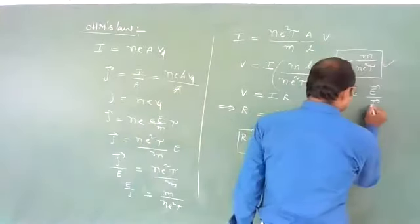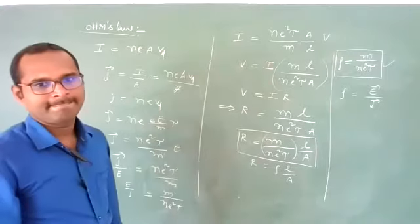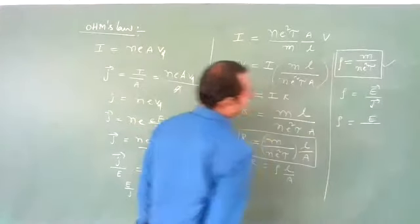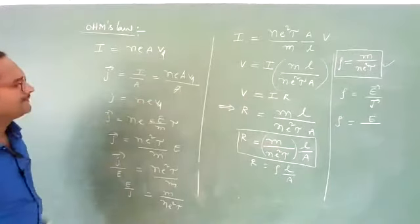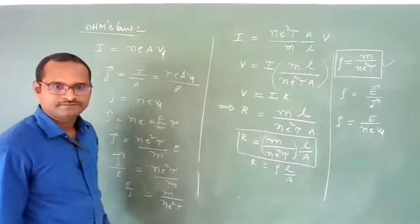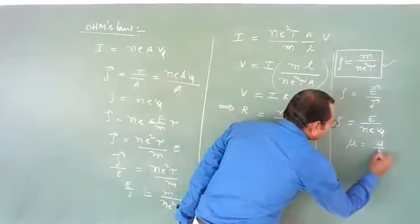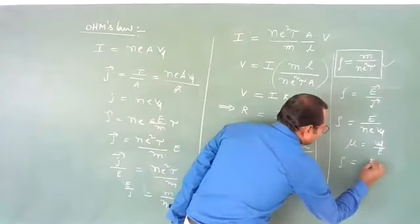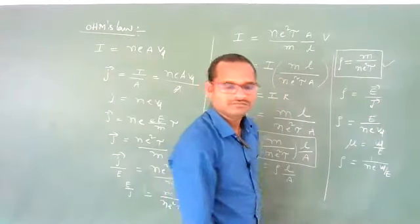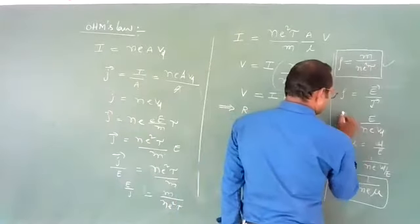This gives another form: ρ = E/J. Since J = nevd and mobility μ = vd/E, we can write ρ = E/(nevd) = 1/(ne × vd/E) = 1/(neμ). So resistivity ρ = 1/(neμ). Remember all these formulas — mainly ρ = m/(ne²τ) and ρ = E/J.